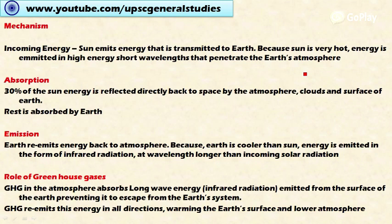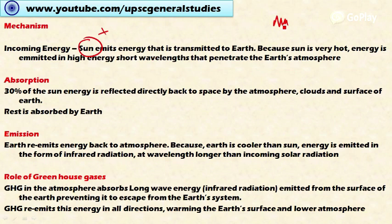Let's look at the mechanism of the greenhouse effect on Earth's atmosphere. The Earth receives incoming energy from the Sun in the form of high-energy short wavelengths — the shorter the wavelength, the more the energy. Since the Sun is very hot, it emits higher energy at shorter wavelengths. This radiation penetrates the Earth's atmosphere and reaches the Earth's surface.